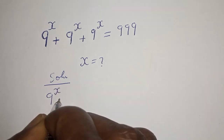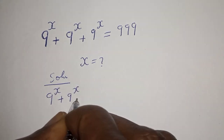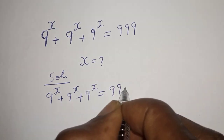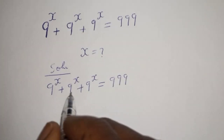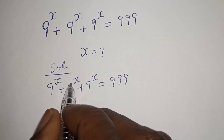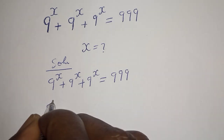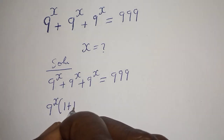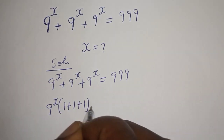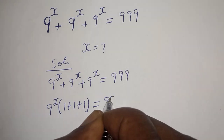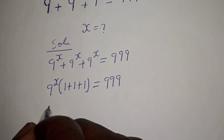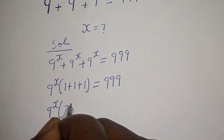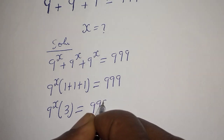9 raised to power s plus 9 raised to power s plus 9 raised to power s is equal to 999. From here, 9 raised to power s is common so we can factor it out: 9^s times (1 plus 1 plus 1) equals 999, which gives 9^s times 3 equals 999.